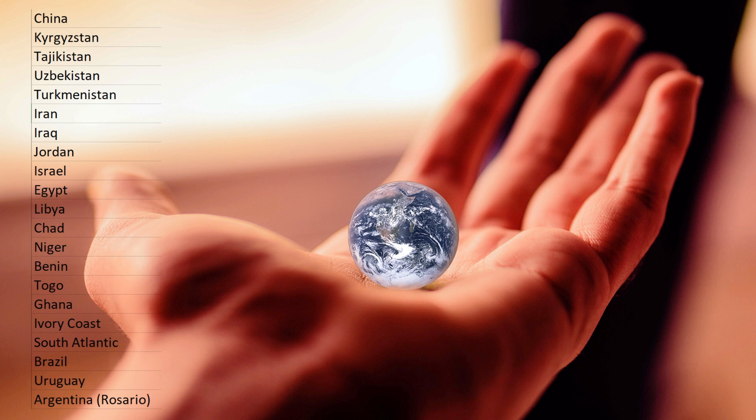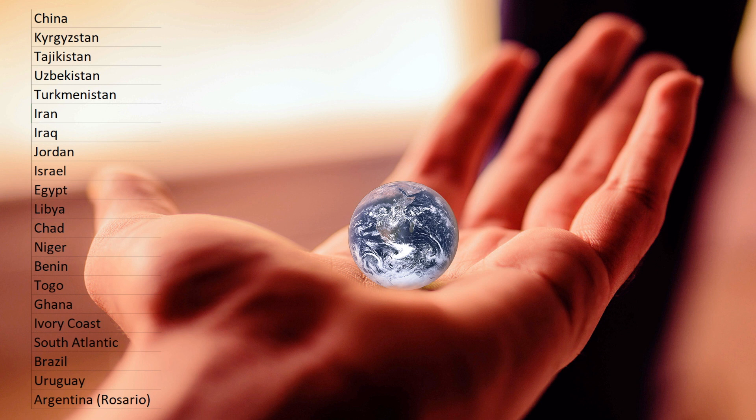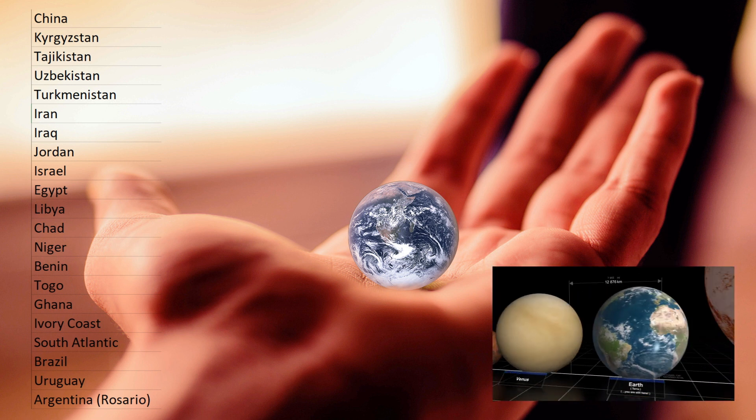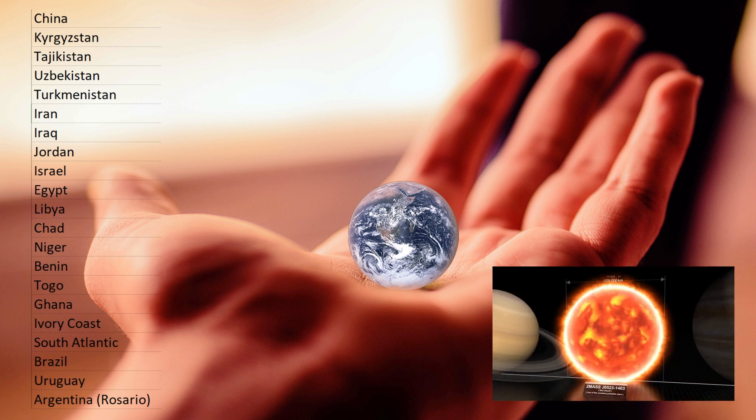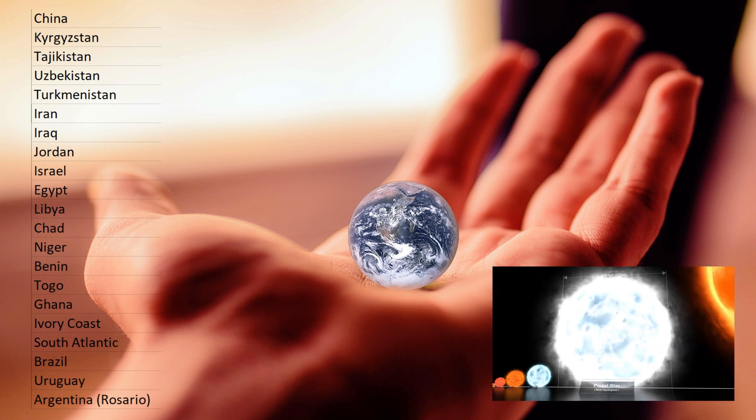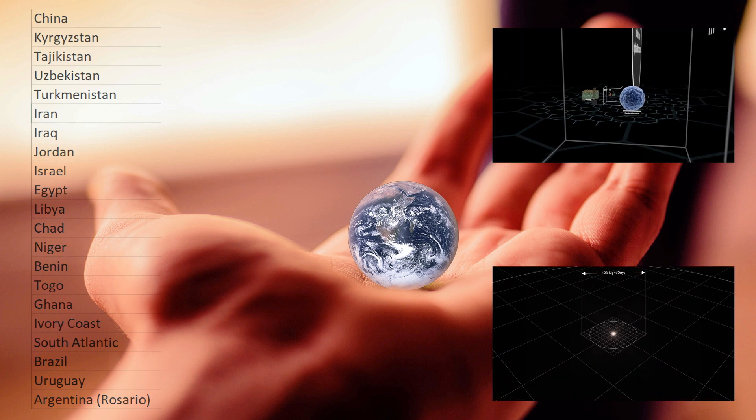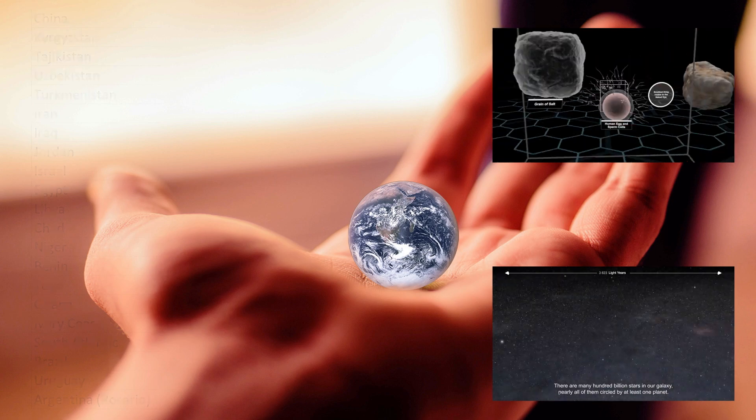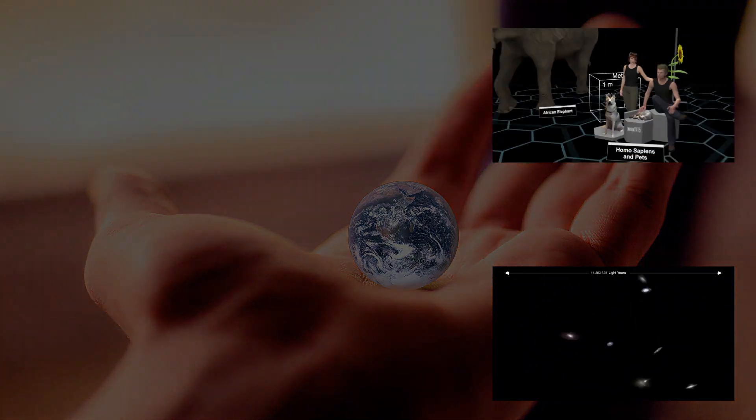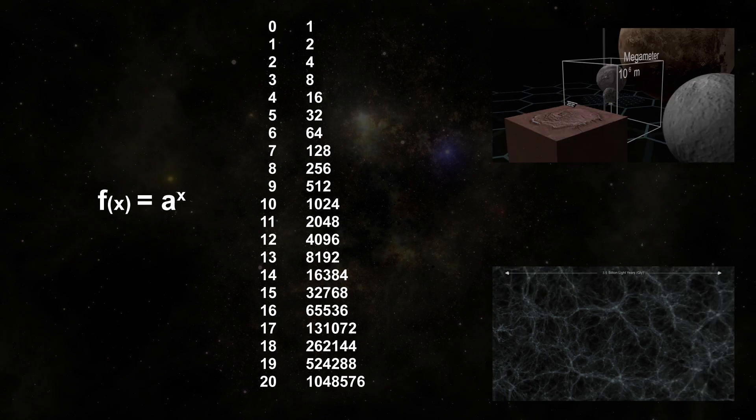So considering these vast distances in space you might ask yourself how it was possible that in my star size comparison movies we could zoom from moon size to the end of the universe in a few minutes. Or as in the vortex doing that smoothly starting from the tiniest particle. This is only possible because speed is an exponential function here. Each next step is a multiple of the speed of the previous step.